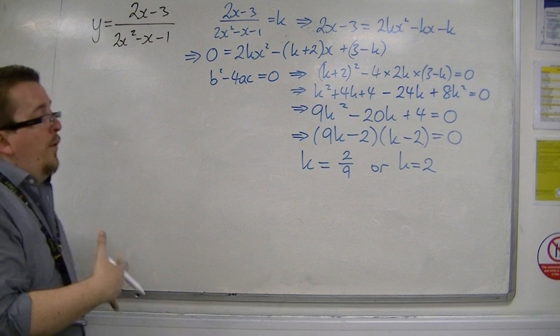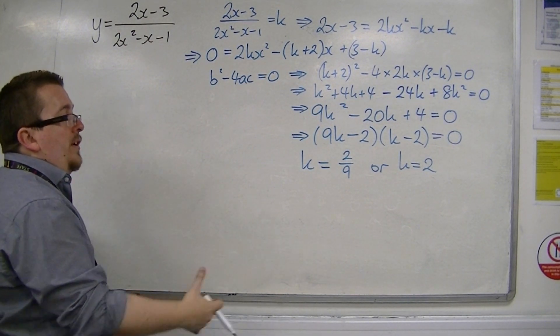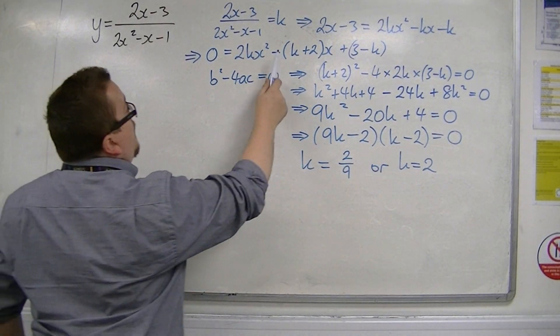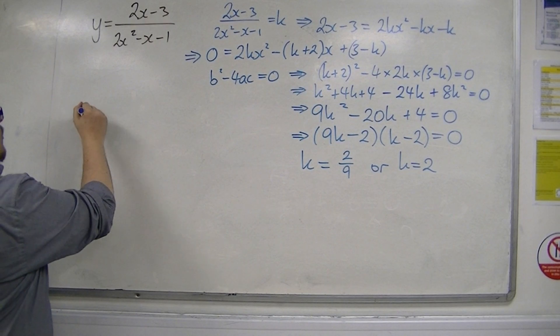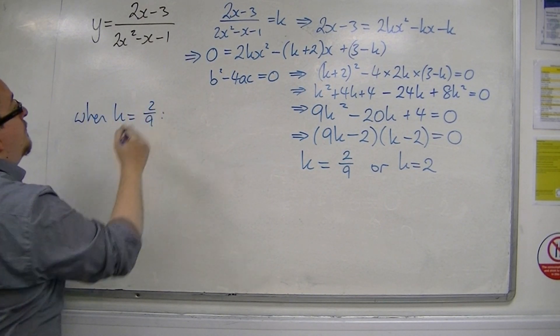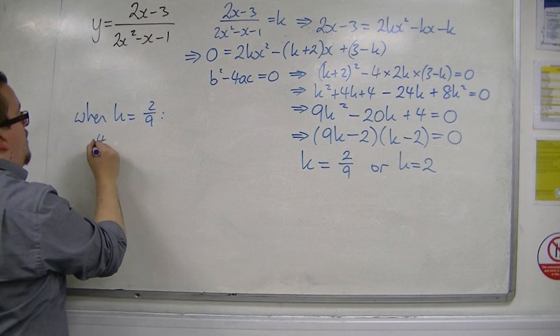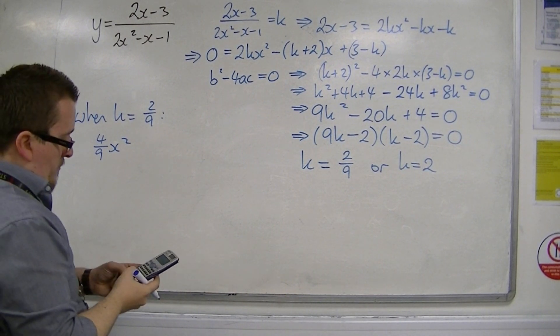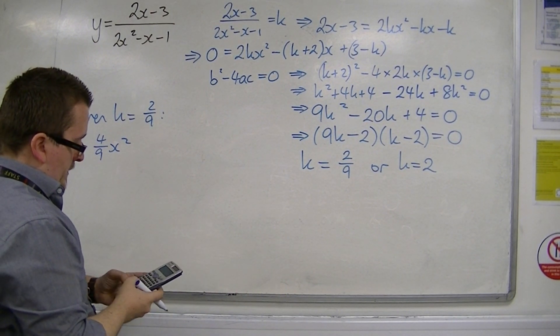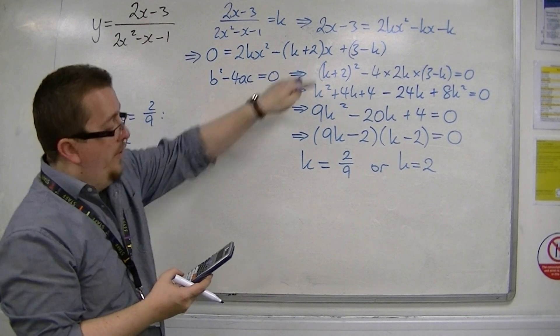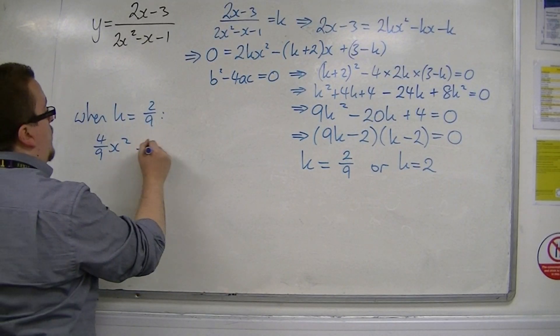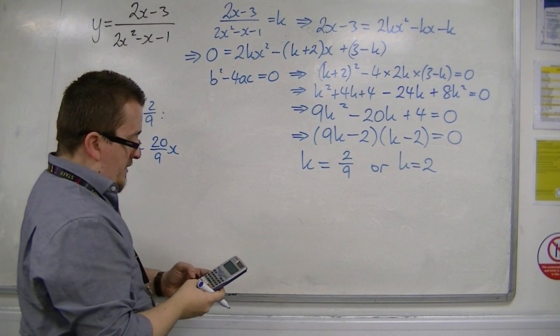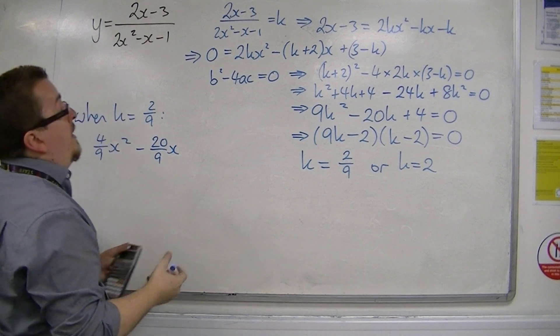Now, if I want to work out what the x values are, because these are the y values, the coordinates, I want to substitute each of these in turn back into this equation. So, when k is equal to 2/9, I have 2/9 times 2, so 4/9 x squared. Take away 2/9 plus 2, so 2/9 plus 2, that's 20/9, so take away 20/9 x, plus 3 take away 2/9, which is 25/9, and that's going to be equal to 0.